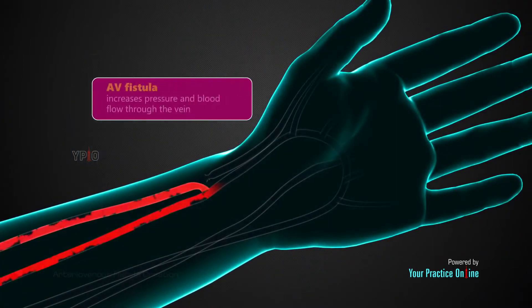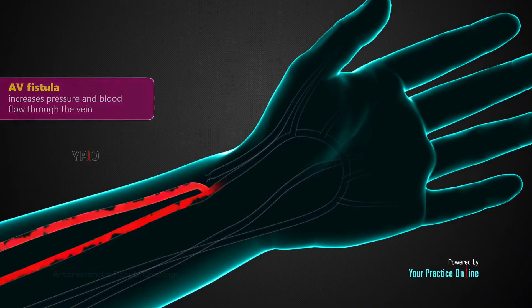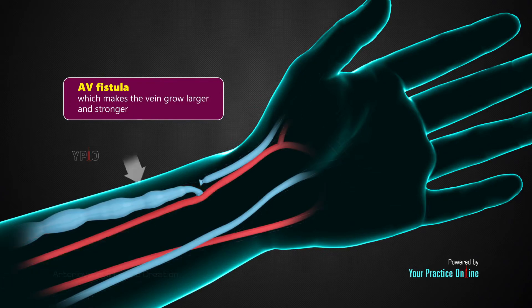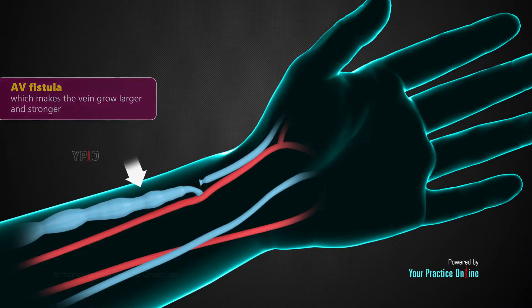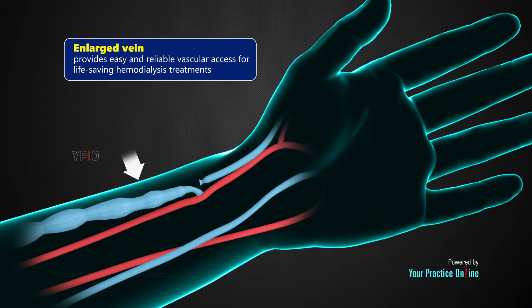The creation of an AV fistula increases pressure and blood flow through the vein, which makes the vein grow larger and stronger. The enlarged vein provides easy and reliable vascular access for life-saving hemodialysis treatments.